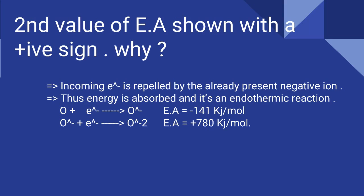As you can see in this reaction, when oxygen gains one electron, the electron affinity is minus 141 kilojoules per mole. But when the O negative ion (anion) gains another electron, the second value of electron affinity is +780 kilojoules per mole with a positive sign. That is why the second value is with a positive sign, because it is an endothermic reaction.